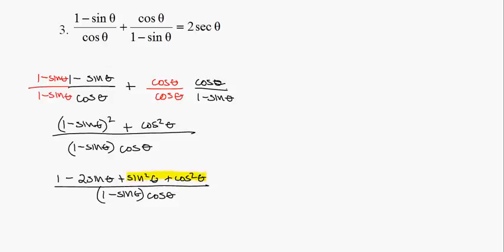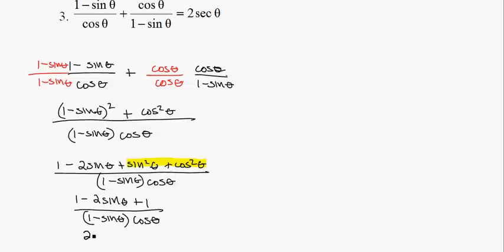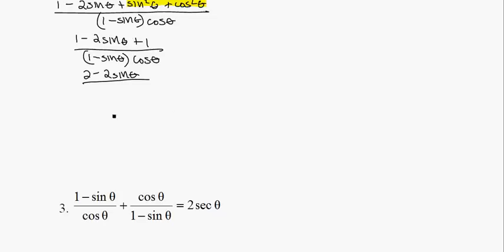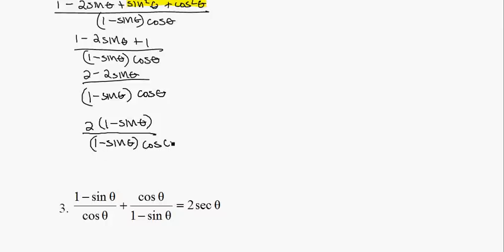I didn't distribute the denominator because I need to have a secant there, so I'll leave this cosine. Expanding (1 minus sine theta) squared: I get 1 minus 2 sine theta plus 1, all over (1 minus sine theta) cosine theta — wait, 1 plus 1 is 2, so I get 2 minus 2 sine theta all over (1 minus sine theta) times cosine theta. Factor out a 2: I get 2(1 minus sine theta) over (1 minus sine theta) times cosine theta. These two cancel, leaving 2 over cosine theta, which is the same as 2 secant theta. So we're done.